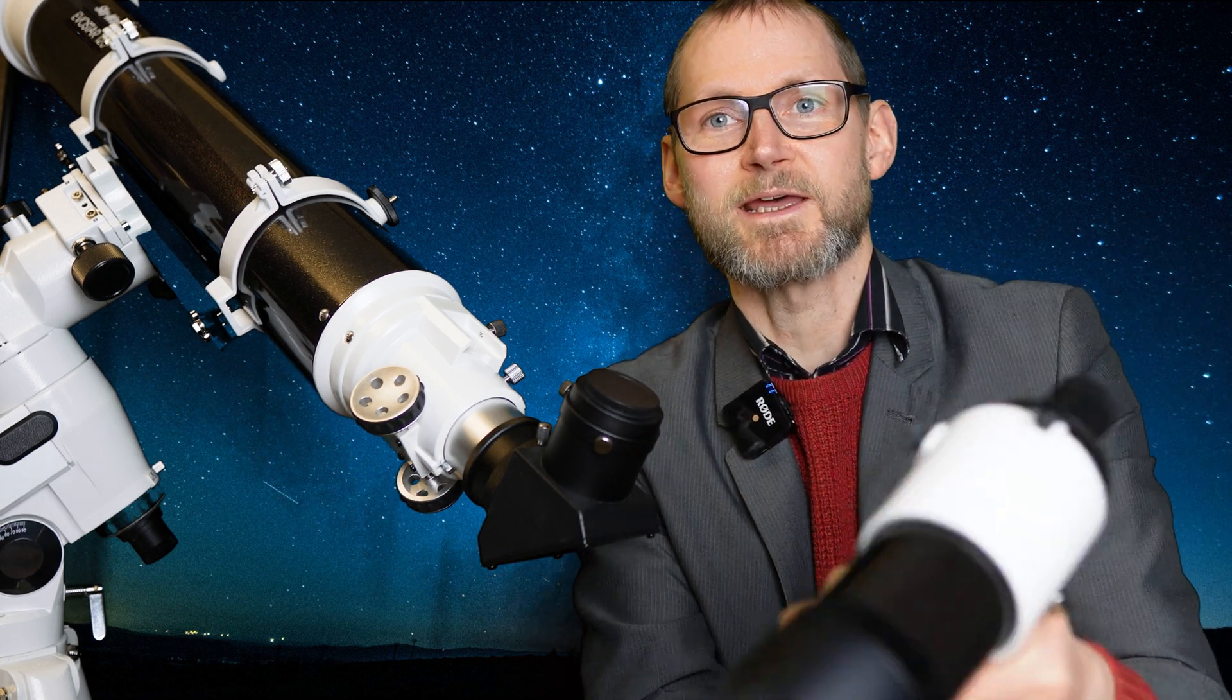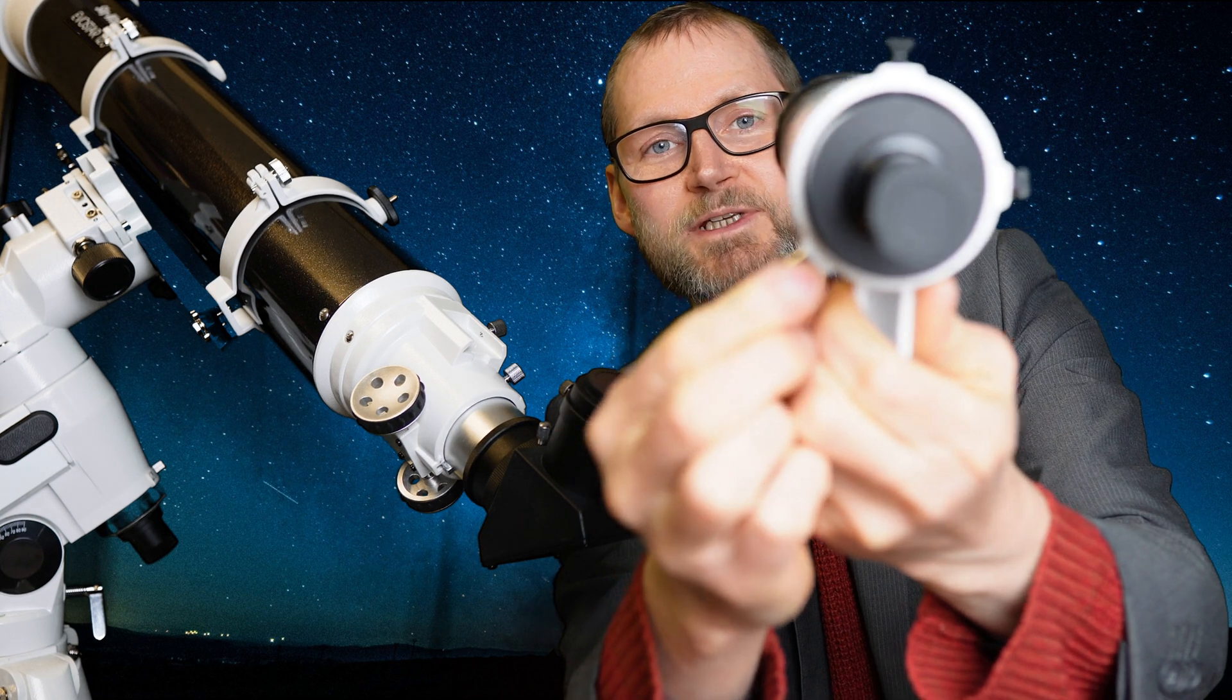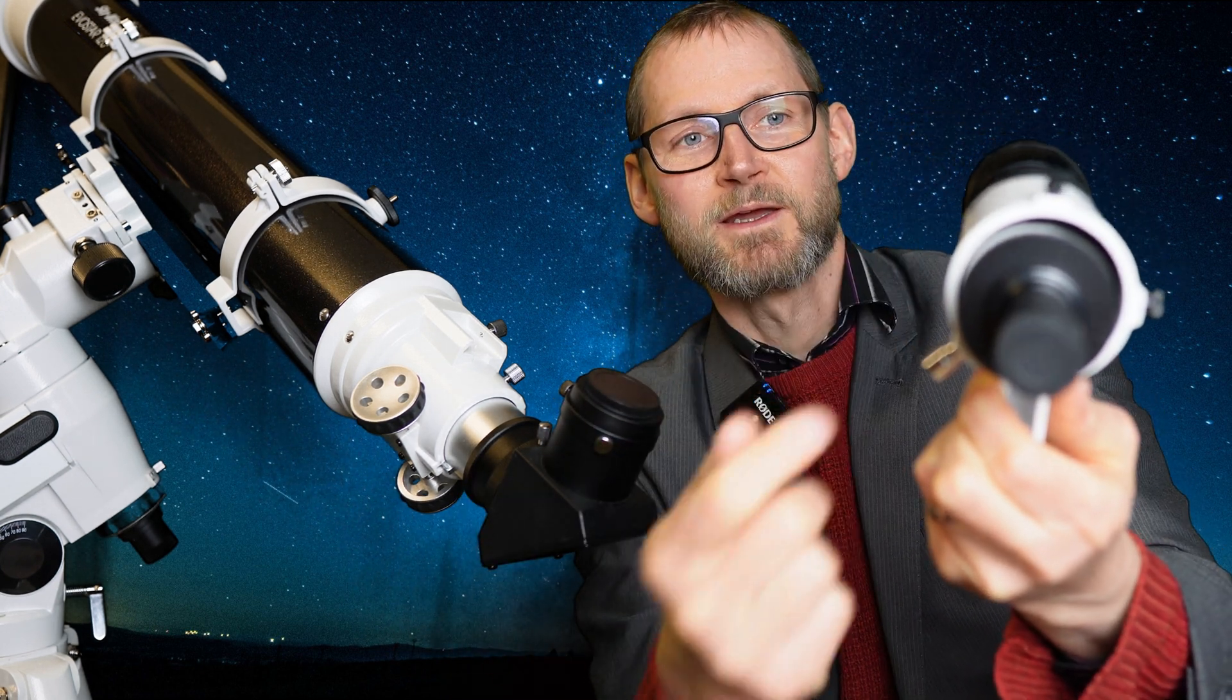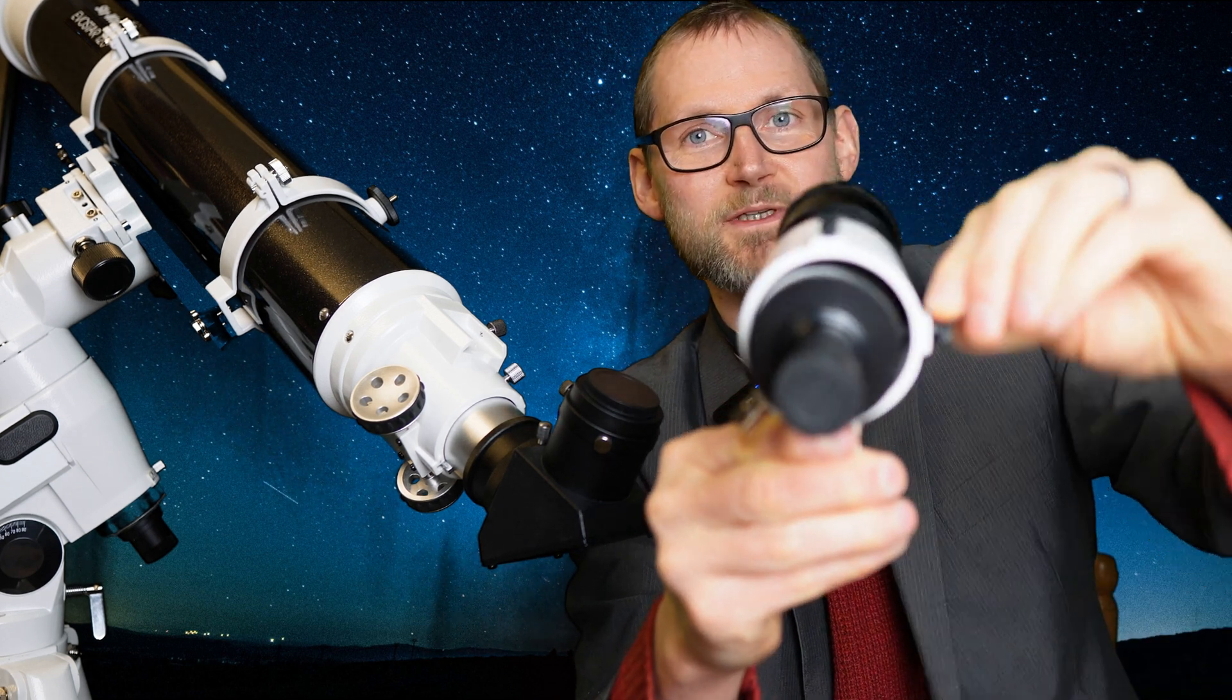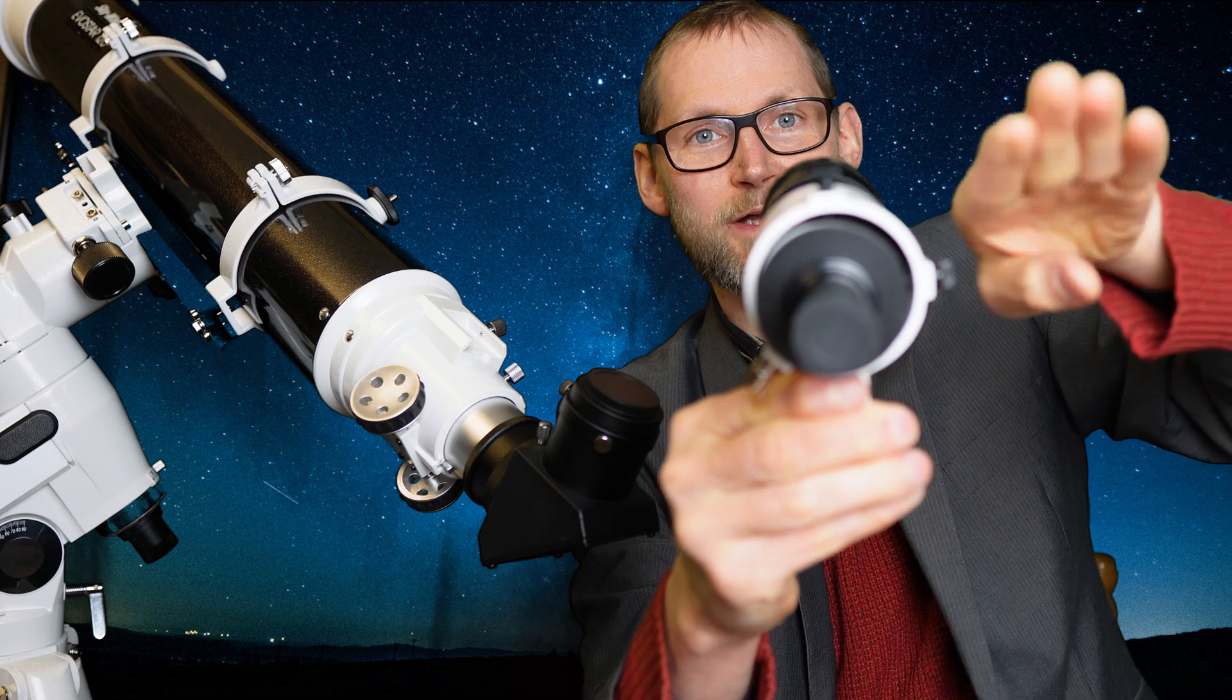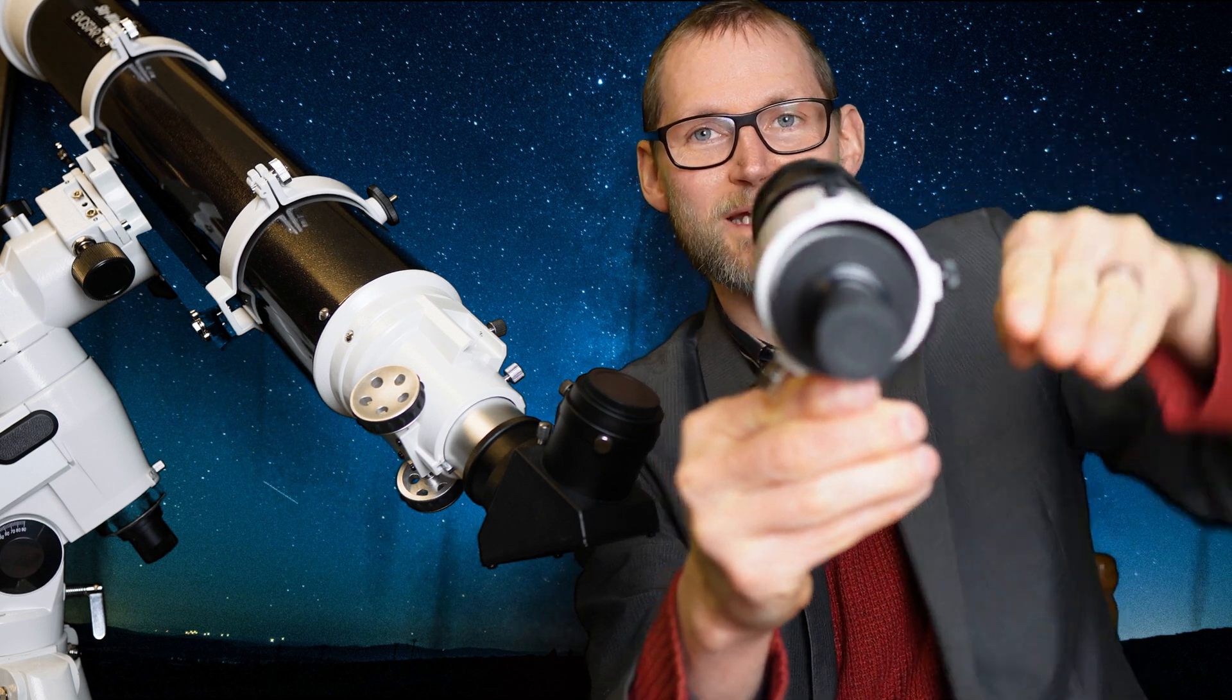And then this bit here is spring loaded so you pull that out, slide the finder through until it meets the rubber o-ring, and then you can make adjustments to these screws here to align the position of this with your main telescope.